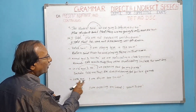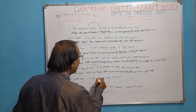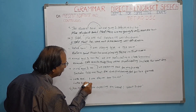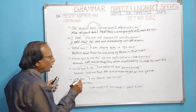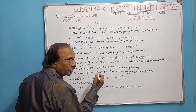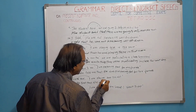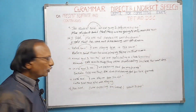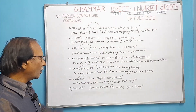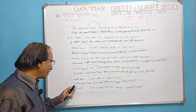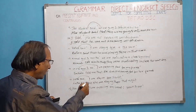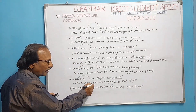Latha said, 'I am staying here tonight.' Write 'Latha said' as it is and add 'that.' 'I' refers to Latha, so the subject becomes 'she.' Present continuous 'I am staying' changes to past continuous 'she was staying.' 'Here' changes to 'there,' and 'tonight' changes to 'that night.' Result: Latha said that she was staying there that night.